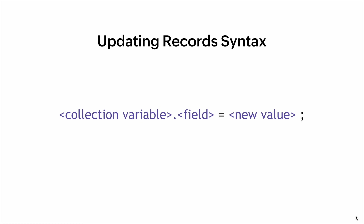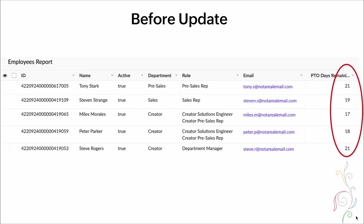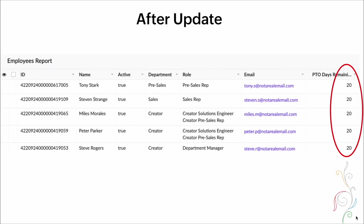The updating record syntax: we specify the collection variable containing the record, put a period and the field name of that record, and assign it a new value. In this example, we have a fetch command getting every single record in the employees table, then iterating through every single record and updating the PTO days remaining field to equal 20. Before the update, the PTO days remaining values are all different. After the update, every single field on the right side gets updated to the number 20.